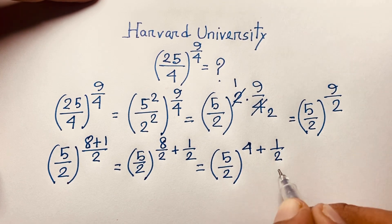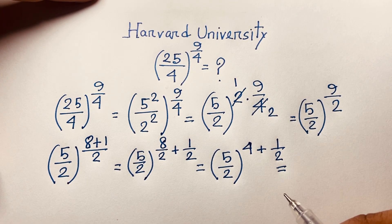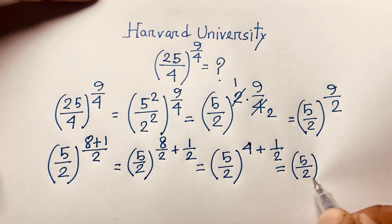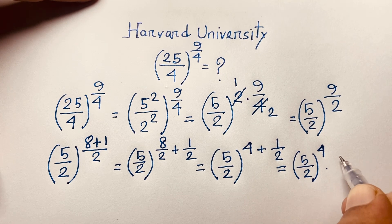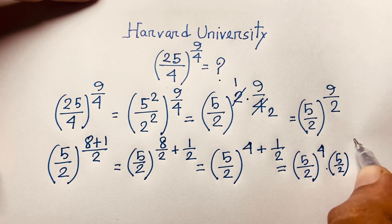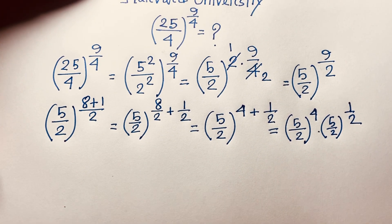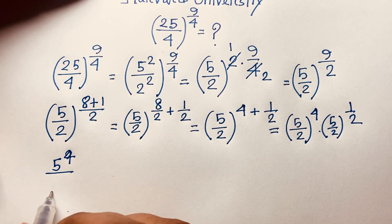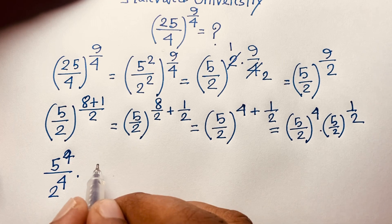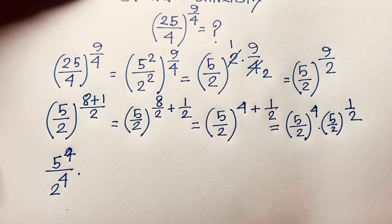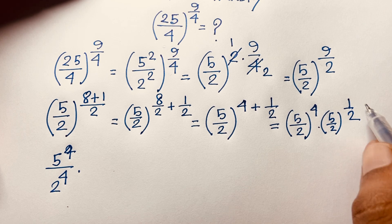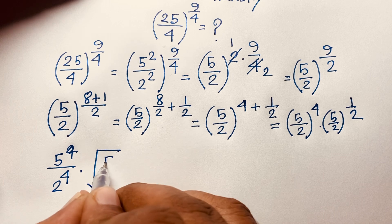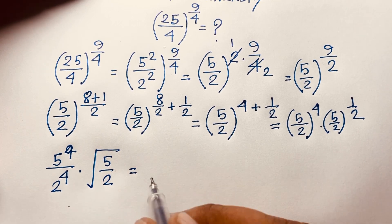Using the exponential law a^(n+m) = a^n × a^m, where m = 1/2, we get (5/2)^4 times (5/2)^(1/2). The numerator gives 5^4 and denominator 2^4. Since a^(1/2) = √a, the (5/2)^(1/2) term becomes √5 over √2.